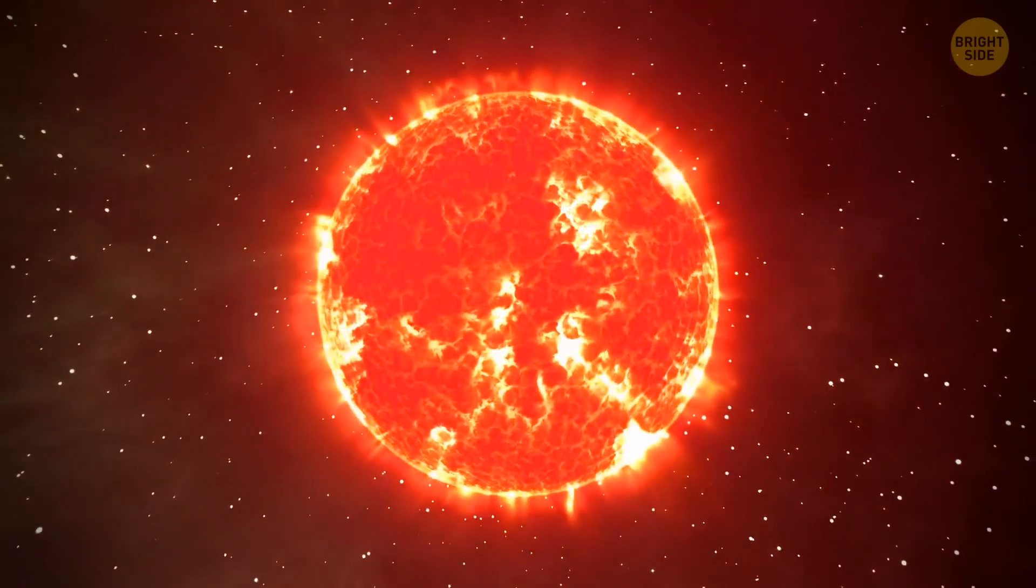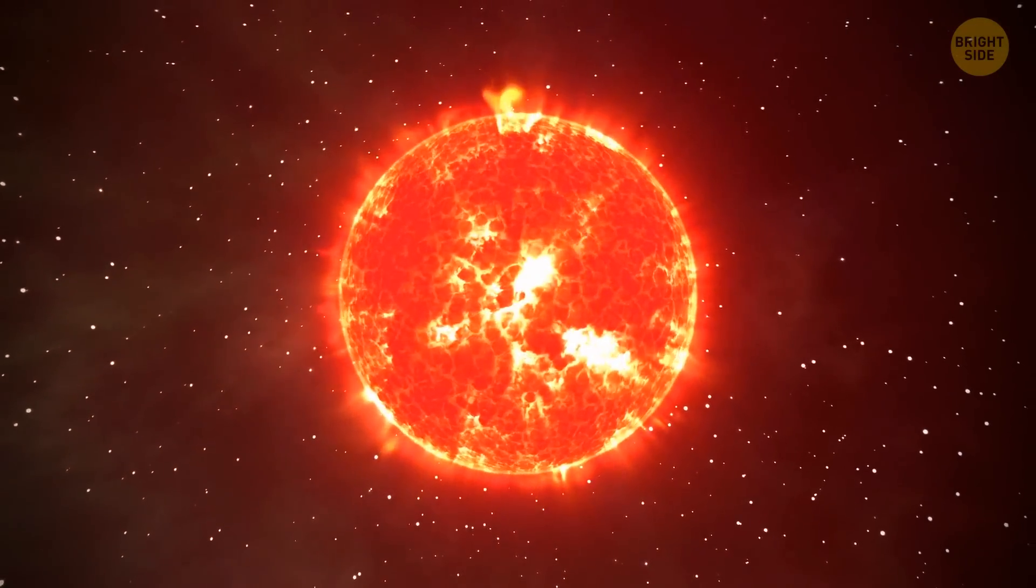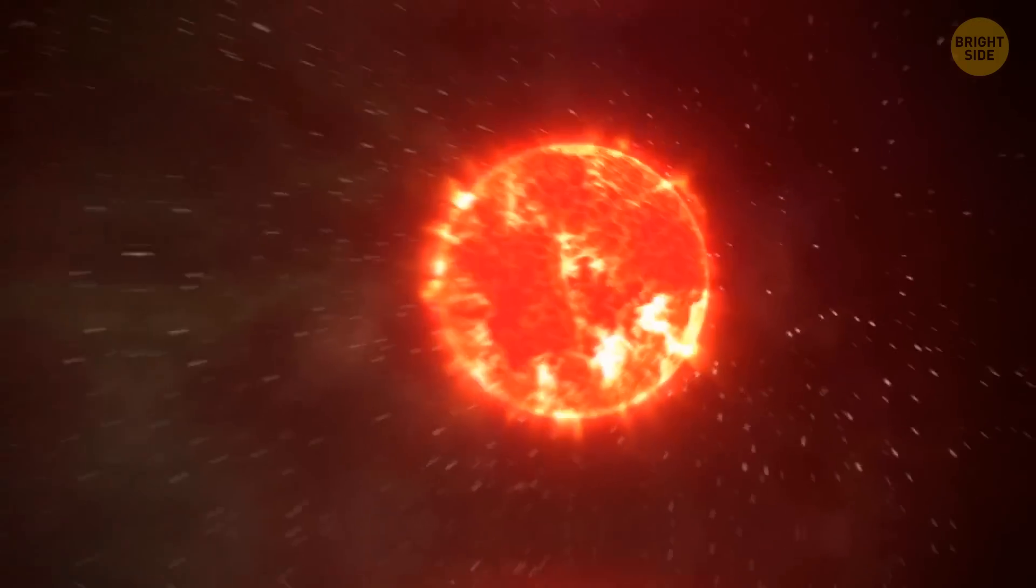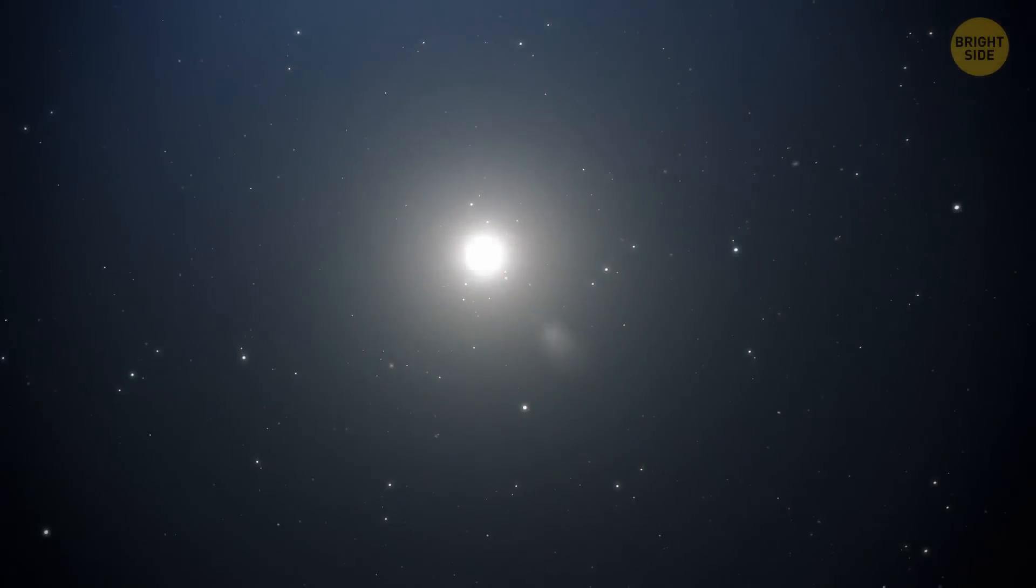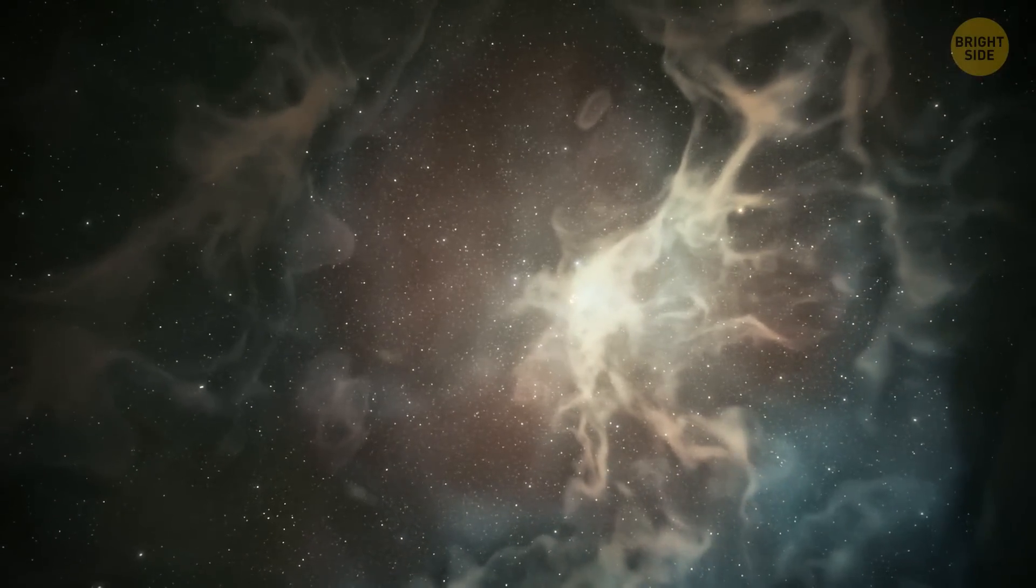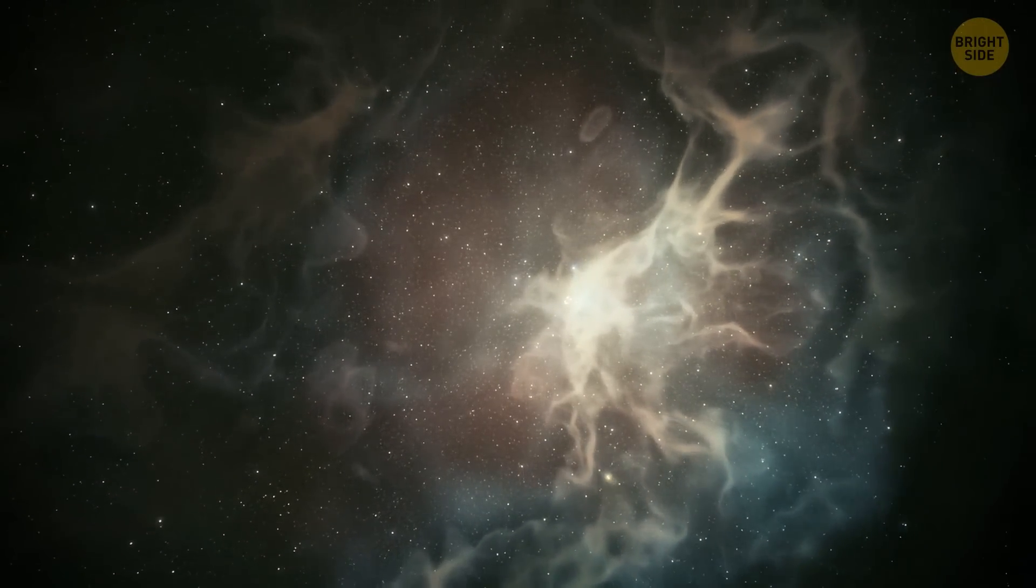After eating us all, the star will remain a red giant for another billion years or so. And then, sooner or later, it will begin to shrink and fade, turning into a white dwarf. In the end, nothing will remain of it but a bright and colorful planetary nebula.